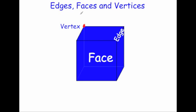In this video we're going to look at edges, faces and vertices. For three-dimensional shapes it's very important you know what these terms are. So let's start off by looking at this cube and look at what a face is. A face is an individual surface of the shape. So here we've got the front face, a face on the side, right hand side, a face on the top, a face on the bottom, a face on the left hand side and a face on the back. So a face is an individual surface of a three-dimensional shape.